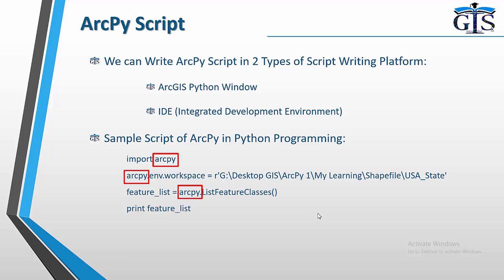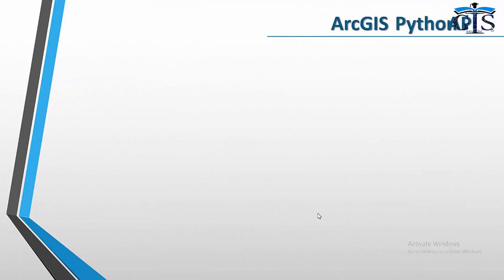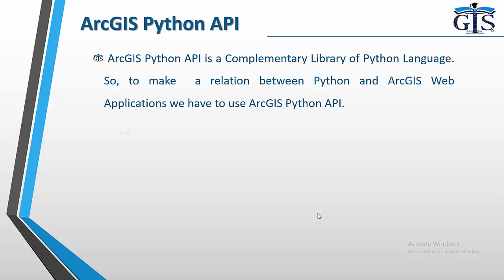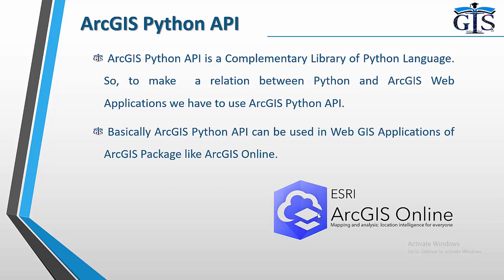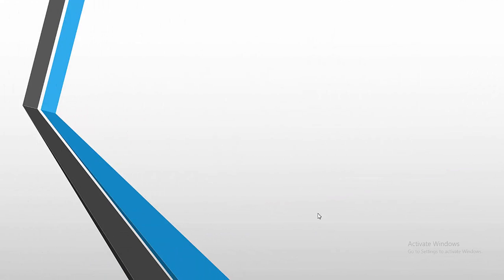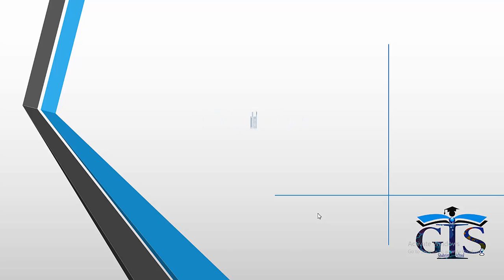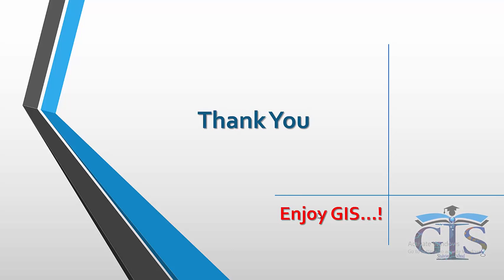We will use arcpy in ArcMap's Python window and also in an IDE to perform our ArcGIS tasks using Python. Although this course is focused on arcpy, let's briefly look at the ArcGIS Python API. It is a complementary Python library used to make the relationship between Python and ArcGIS web applications, specifically web GIS applications like ArcGIS Online. Thank you, and always enjoy GIS!